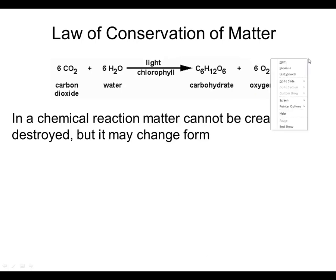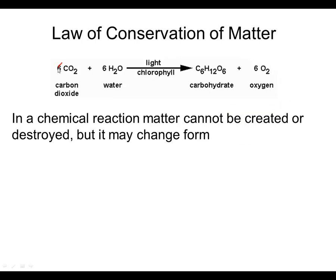Now, why do we have to put coefficients in front of particular formulas in order to follow the law of conservation of matter? If we get rid of the coefficients and just have one molecule of each substance, we can do an atom inventory—looking at the number of atoms on each side of the equation. For carbon on the reactant side, we'd have just one carbon. For hydrogen, we'd have two. For oxygen, two from carbon dioxide and one from water, giving three total.